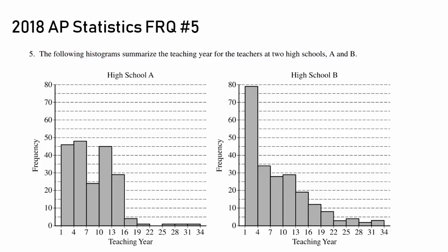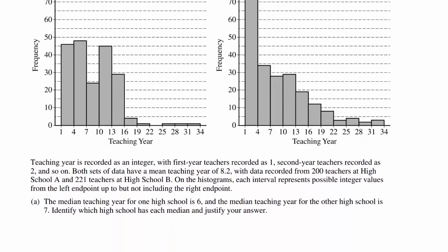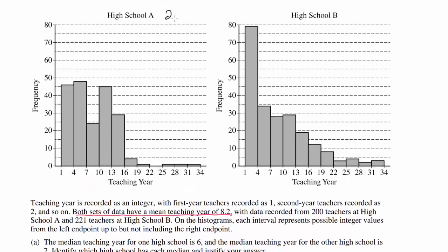Time for question 5. The following histograms summarize the teaching year for the teachers at two high schools A and B. Teaching year is recorded as an integer with first year teachers recorded as one, second year teachers recorded as two, and so on. Both sets of data have a mean teaching year of 8.2, with data recorded from 200 teachers at high school A and 221 teachers at high school B. On the histograms, each interval represents possible integer values from the left-hand point up to but not including the right-hand point.